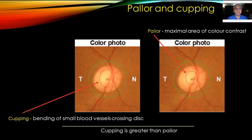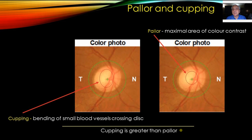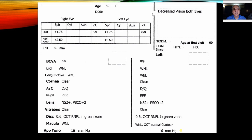Before we start, we need to differentiate pallor and cupping. Cupping is the bending of small vessels crossing the disc — here you can see the area where they are actually bending — compared to pallor, which is the maximal area of color contrast. Cupping is greater than pallor in this patient. Cupping is measured from where the vessels are bending rather than the area of pallor. That's a very important understanding of glaucoma.